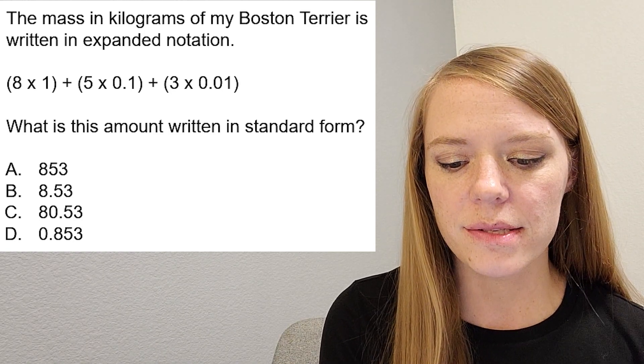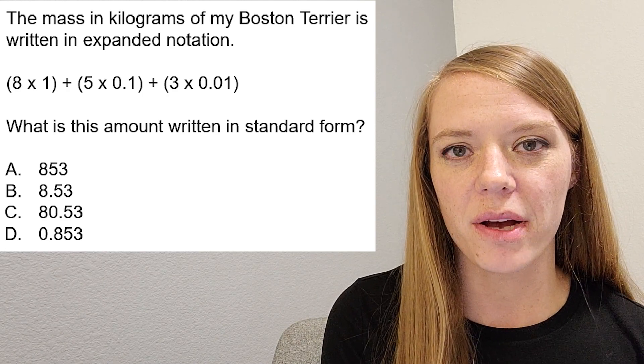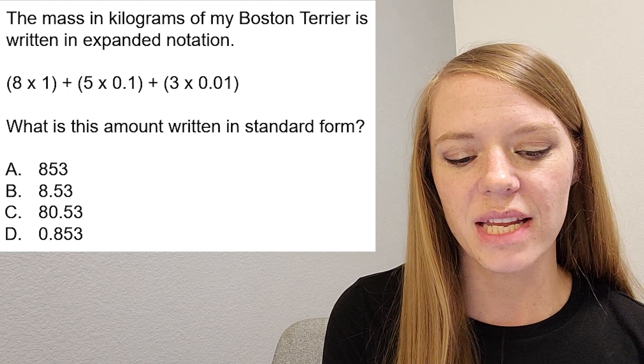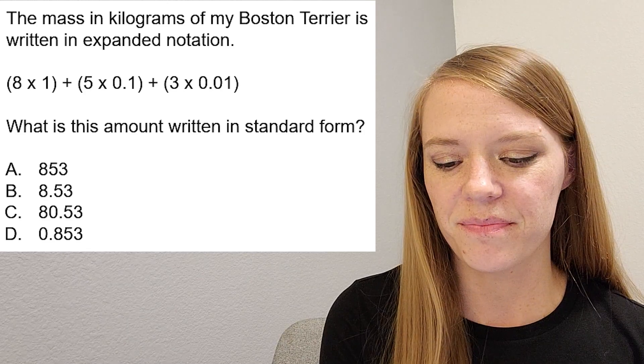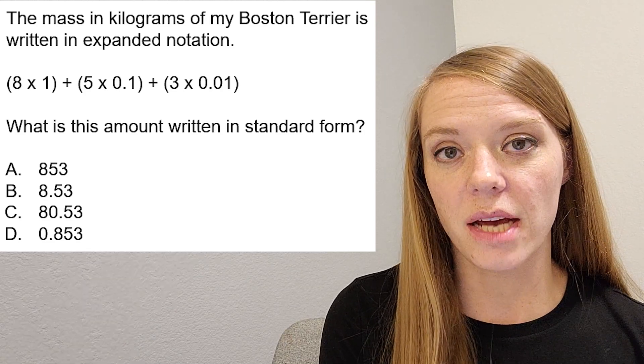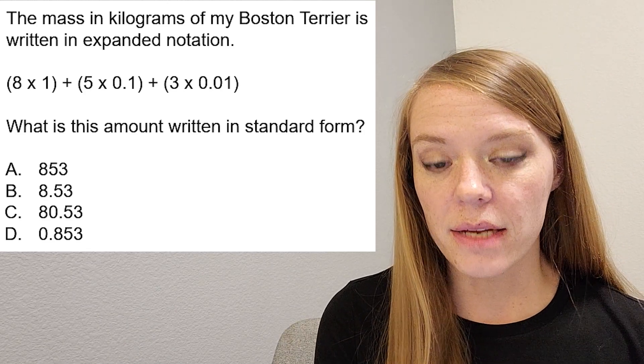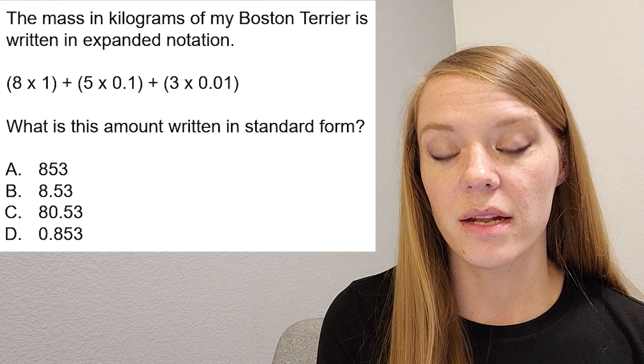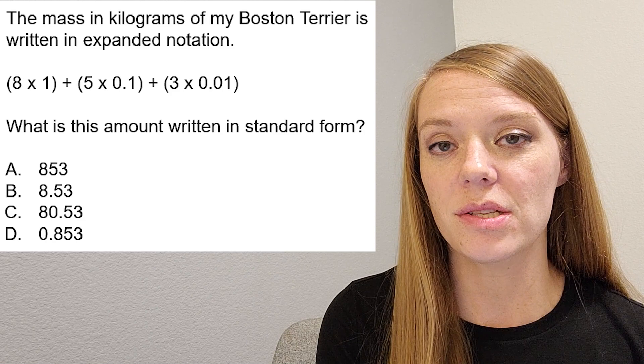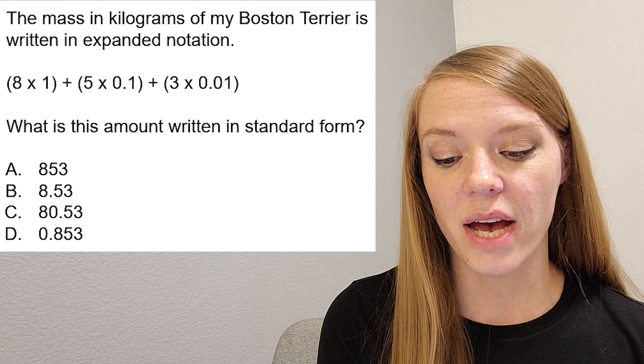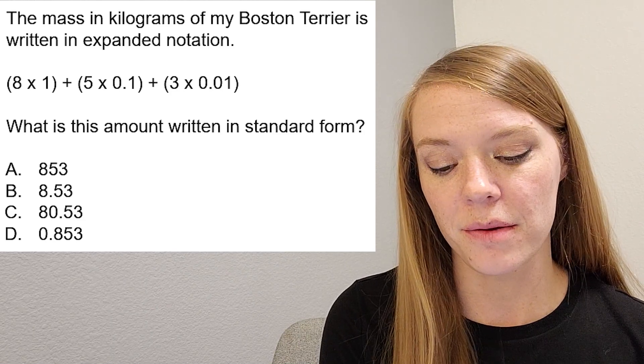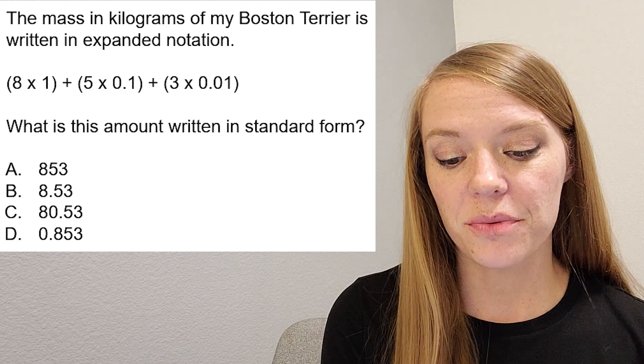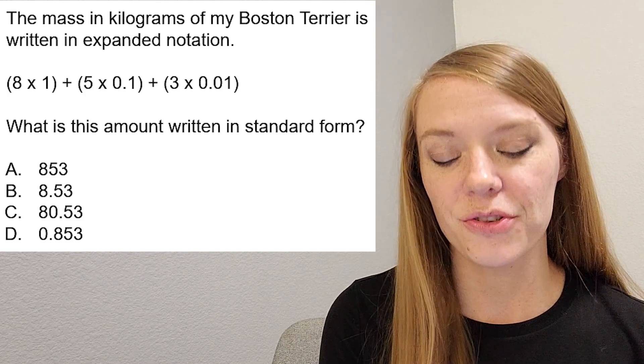It says the mass in kilograms of my Boston Terrier is written in expanded notation. And that looks like it's down below eight times one plus five times. It's important to say these out loud so you know what place it's in. So that says five times one tenth plus three times one hundredth.